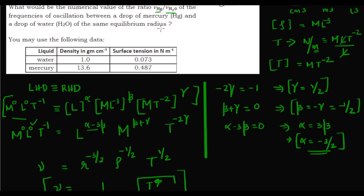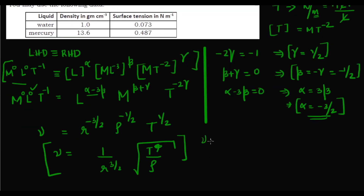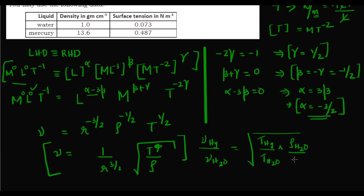Since the equilibrium radius is the same for both liquids, the frequency ratio becomes: ν(Hg)/ν(H₂O) = √(T_Hg / T_water × ρ_water / ρ_Hg). All values of density and surface tension are given in the table — it's a direct calculation. The answer should be around 0.7; please let me know in the comments.